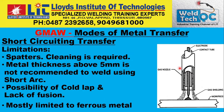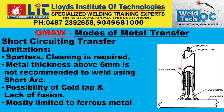The limitations of short circuiting transfer are mainly spatter — cleaning is required. Metal thickness above 5 mm is not recommended; below 5 mm thick metal is recommended, and it is especially useful for sheet metal. There is also a possibility of cold lap and lack of fusion, so you have to be very careful. It is mostly limited to ferrous metals.